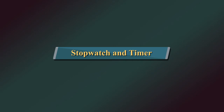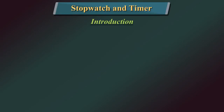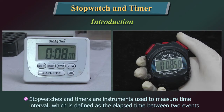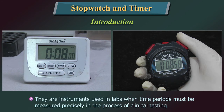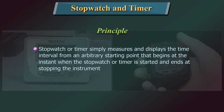Stopwatches and timers are instruments used to measure time intervals, defined as the elapsed time between two events. They are used in labs when time periods must be measured precisely in the process of clinical testing. A stopwatch or timer simply measures and displays the time interval from an arbitrary starting point that begins at the instant the stopwatch is started and ends at stopping the instrument.